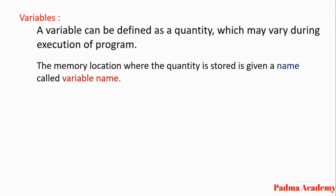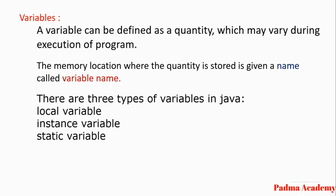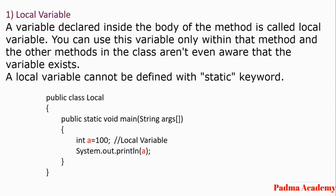There are three types of variable in Java. First is local variable, second is instance variable, third is static variable. We will see all three variables one by one. A variable which is declared inside the body of the method is called a local variable. You can use this variable within that method only.